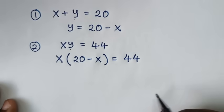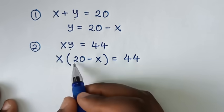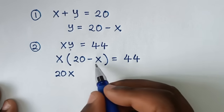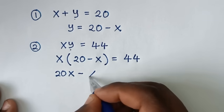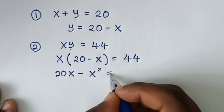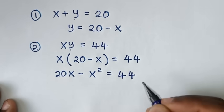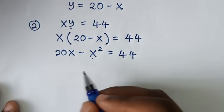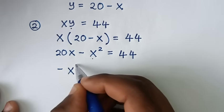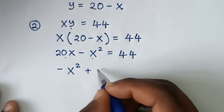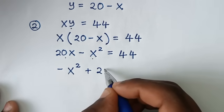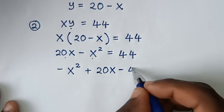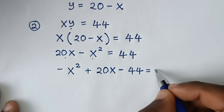Expanding: x times 20 gives 20x, and x times negative x gives negative x squared, so we have negative x squared plus 20x equals 44. Rearranging, we get negative x squared plus 20x minus 44 equals 0.